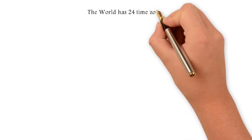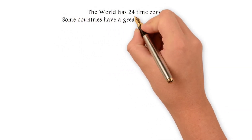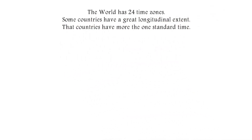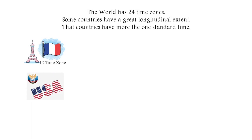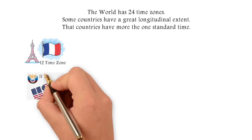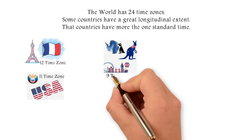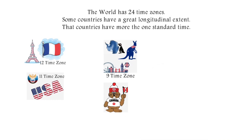The world has 24 time zones. Some countries have such great longitudinal extent that they have more than one standard time zone. For example, France has 12 time zones; Russia and the USA each have 11 time zones; Antarctica, Australia, and the UK have 9 time zones; Canada has 6 time zones; and Denmark and New Zealand have 5 time zones.